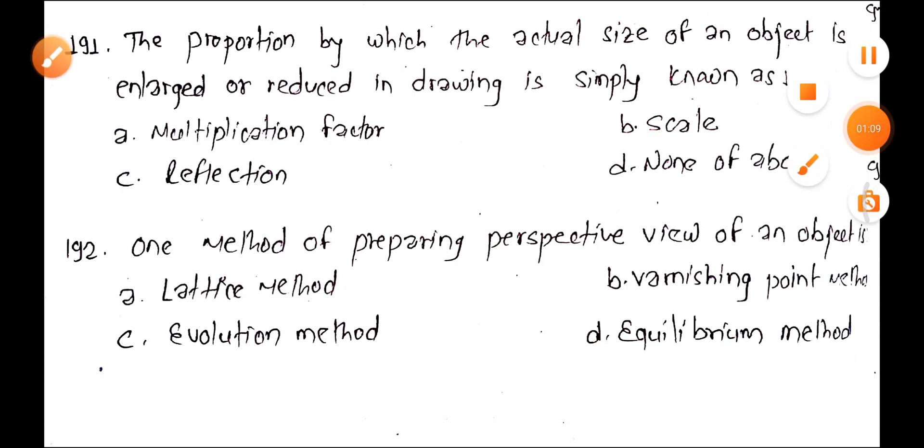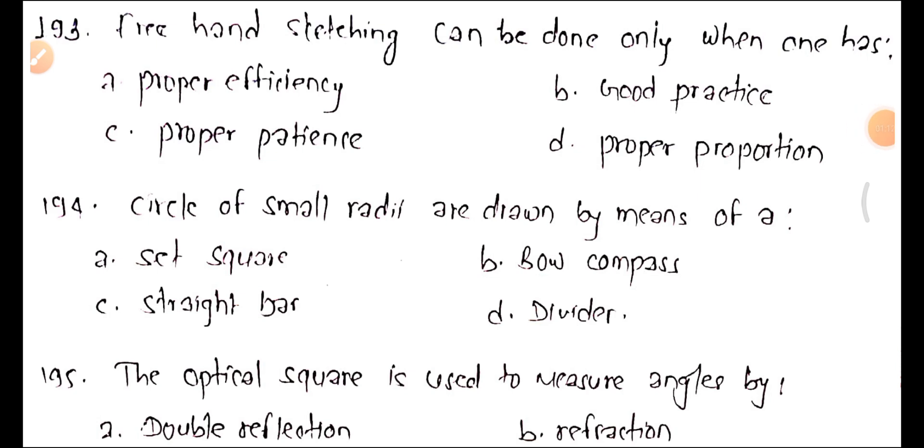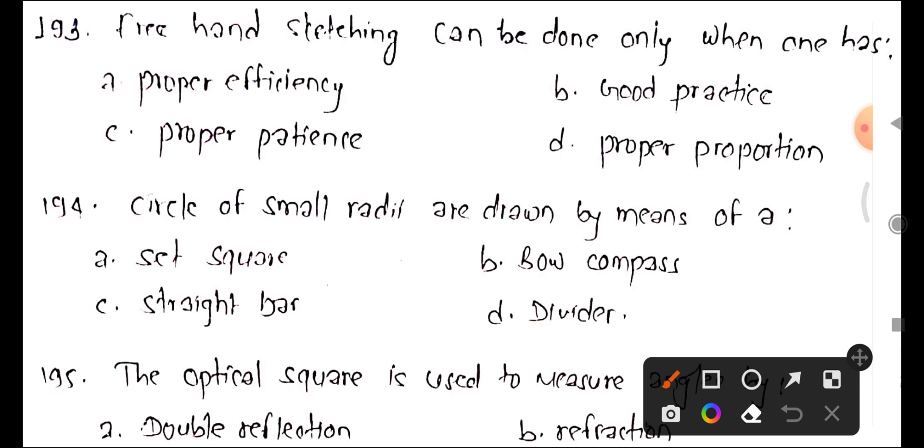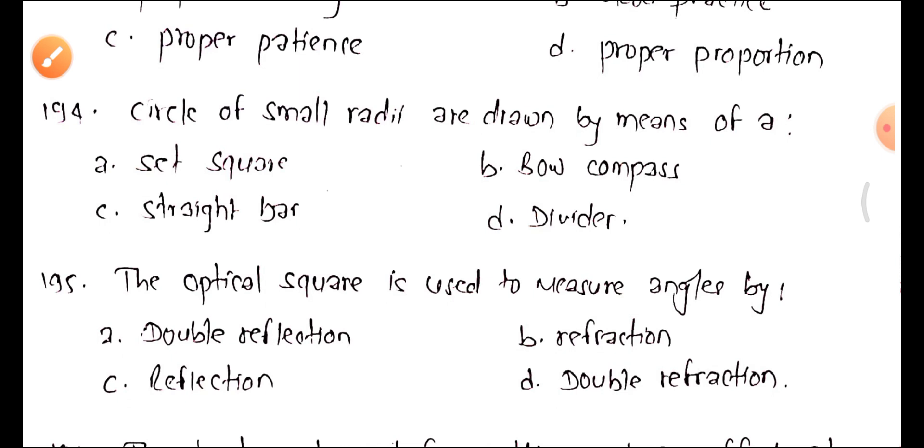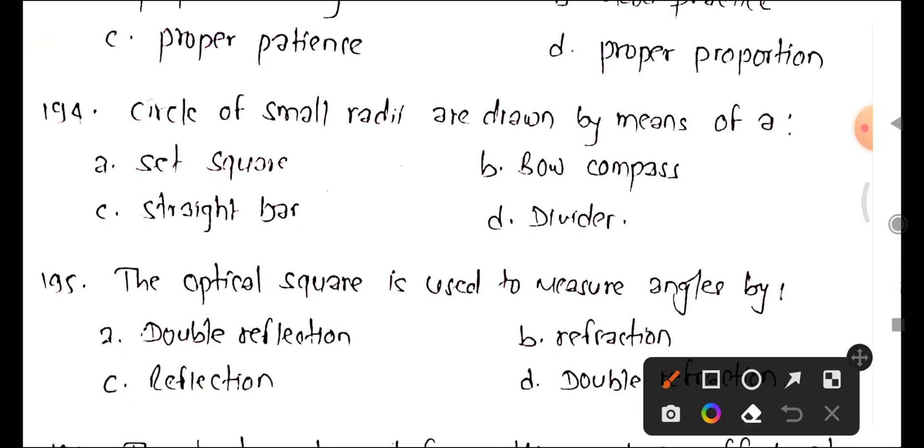Question 193: Freehand sketching can be done only when one adds the vanishing point method. The question is about the different methods available for freehand sketching.